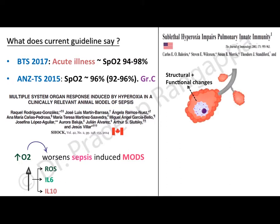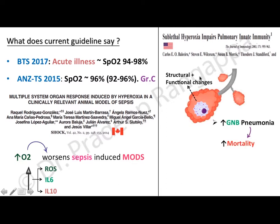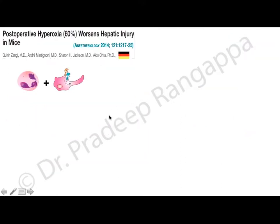Another animal study showed that sublethal hyperoxia has deleterious effects on the structural and functional aspects of the alveoli. When you give increased oxygen, there is a lot of foamy macrophage production and structural and functional changes at the alveolar level. This has been shown to increase the risk of pneumonia and subsequent mortality.